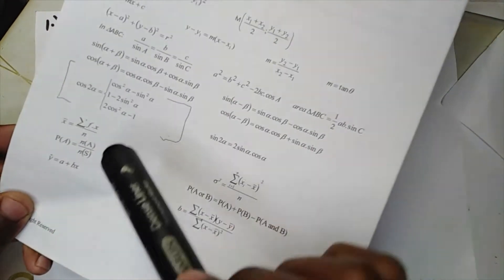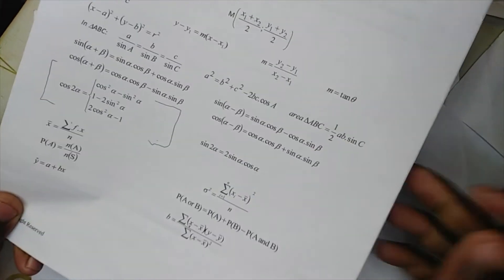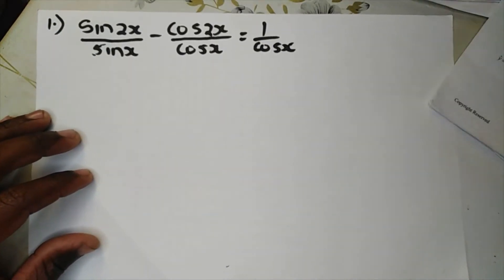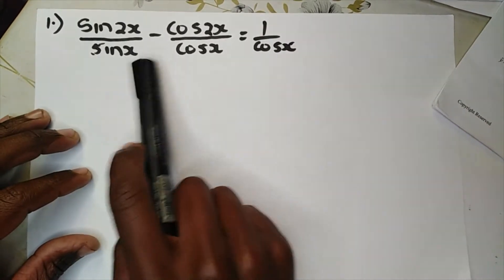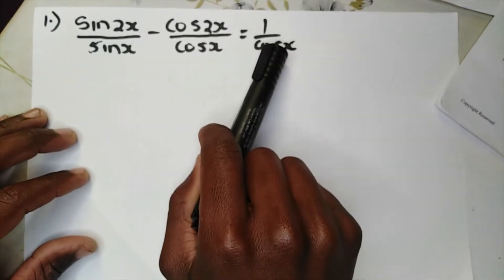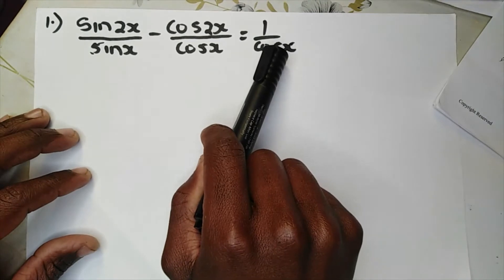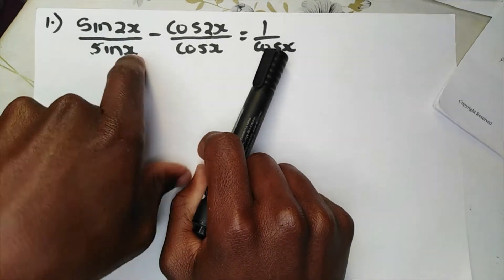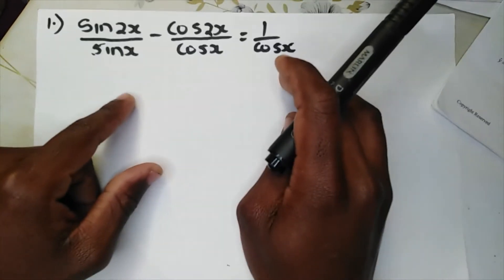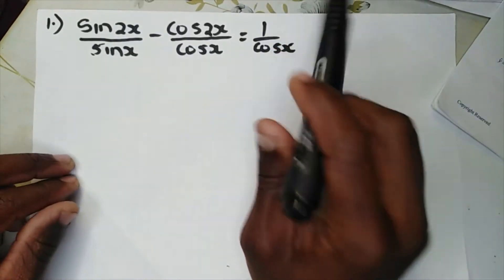You can see here are our double angle identities which we're going to be using today. Our first question — as you can see, you prove this if it's equal to this. You prove the left hand side is equal to the right hand side.